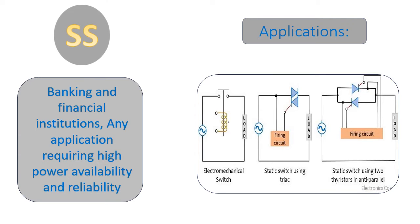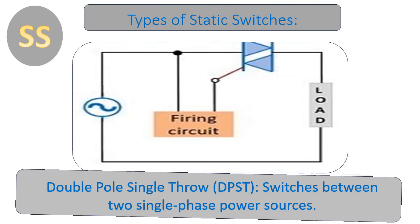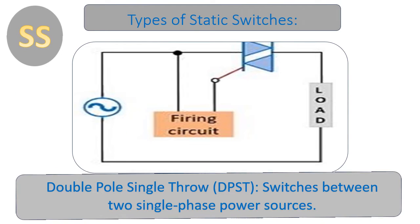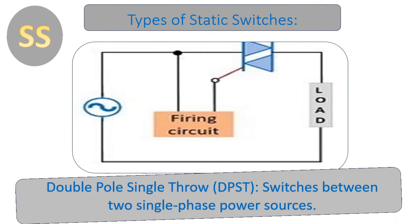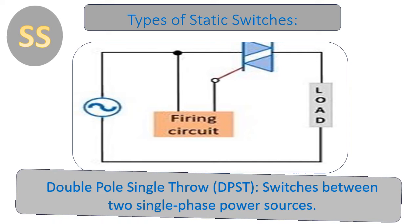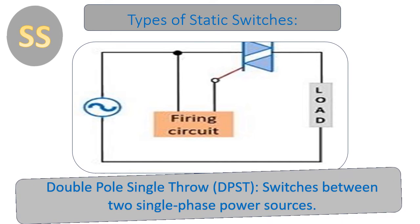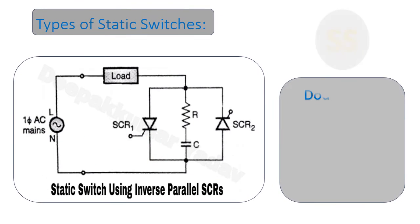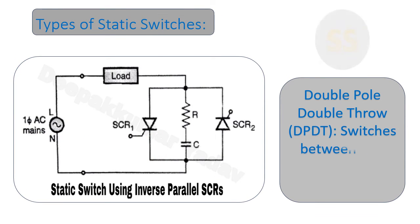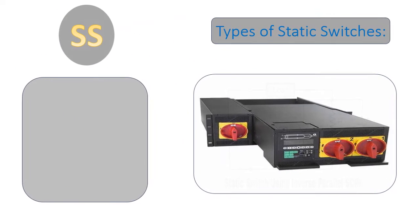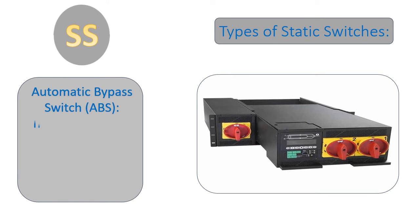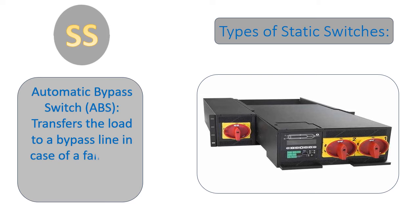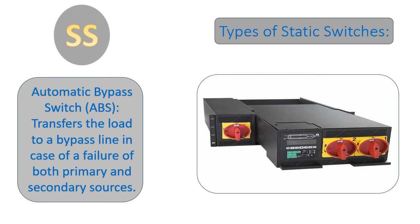Types of Static Switches: Double Pole Single Throw (DPST) switches between two single-phase power sources. Double Pole Double Throw (DPDT) switches between two three-phase power sources. Automatic Bypass Switch (ABS) transfers the load to a bypass line in case of failure of both primary and secondary sources.